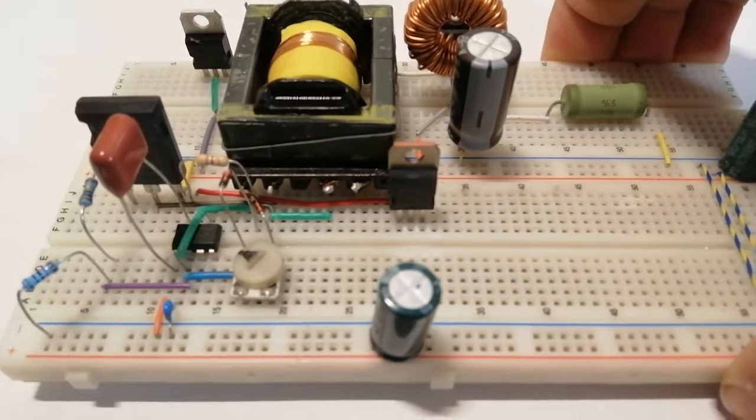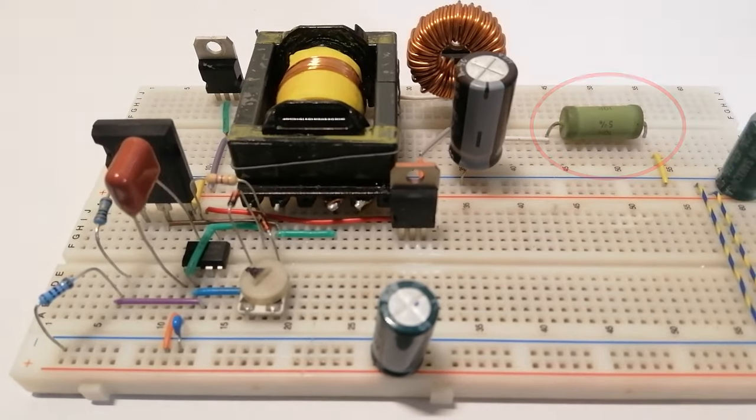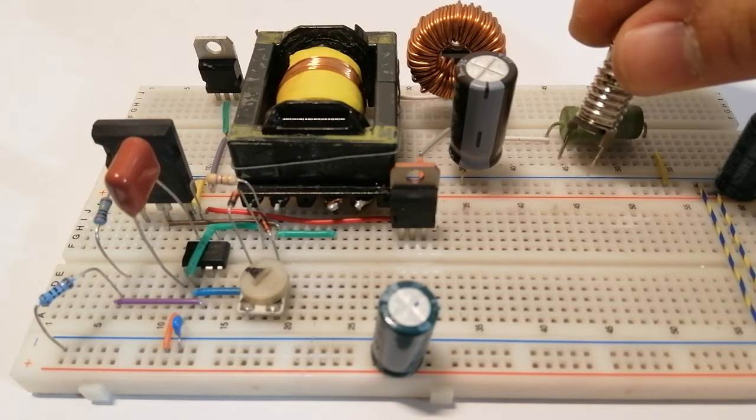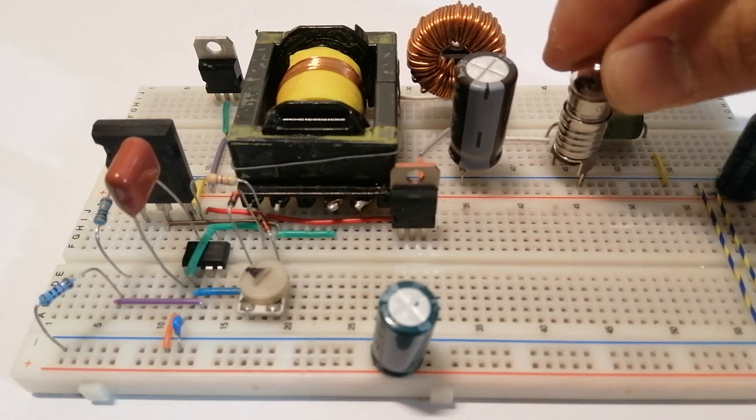So at this point we can build the circuit. Here it is on a breadboard and we can test it and see how it works. I put a 10 ohm load at the output and I'll add a light bulb to give a visual feedback on the voltage at the output.